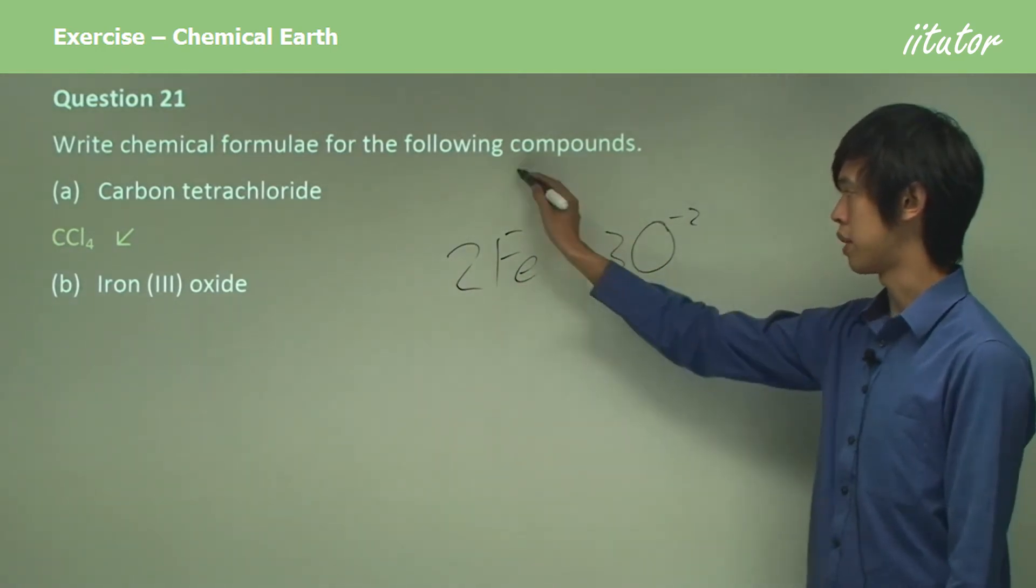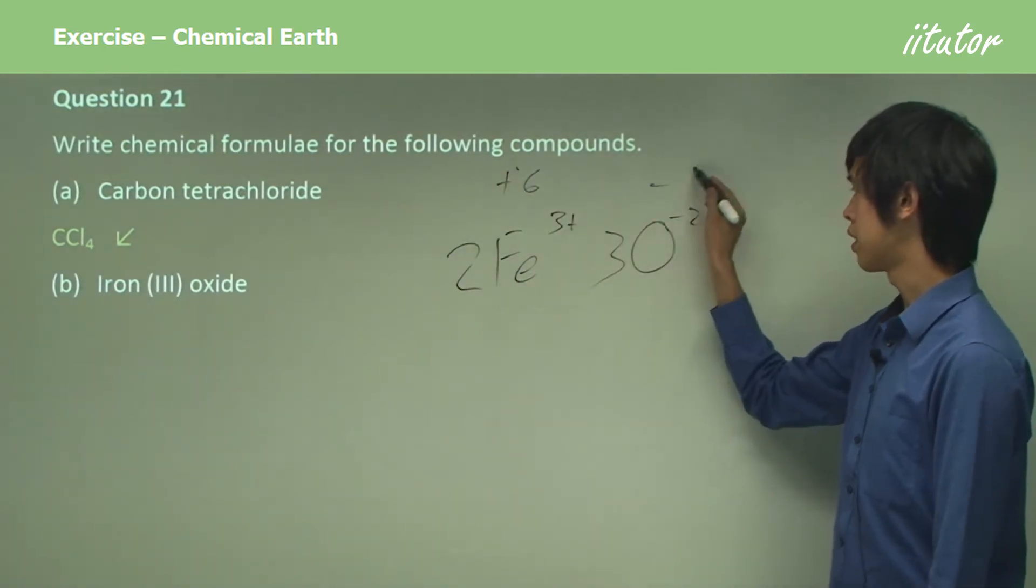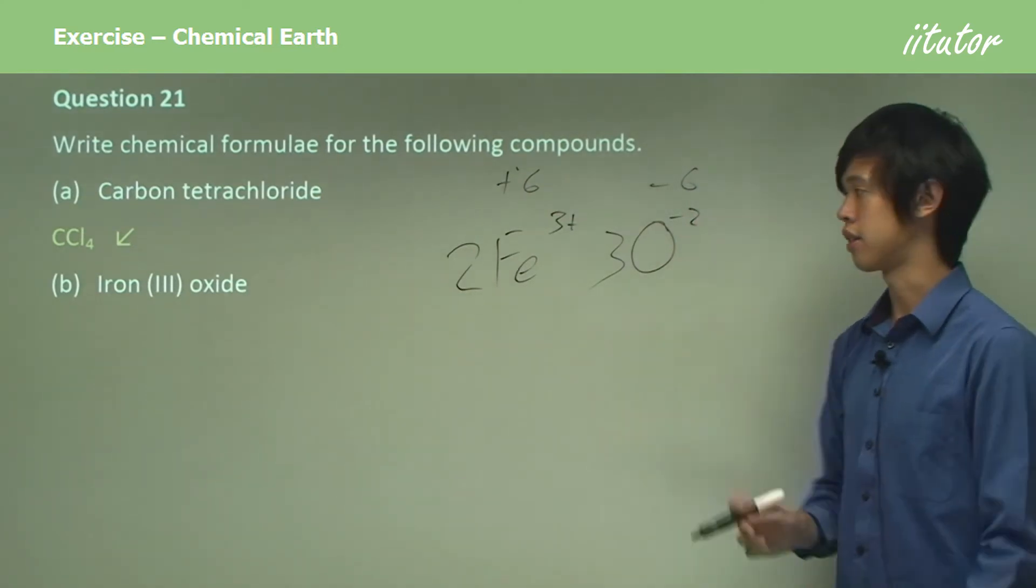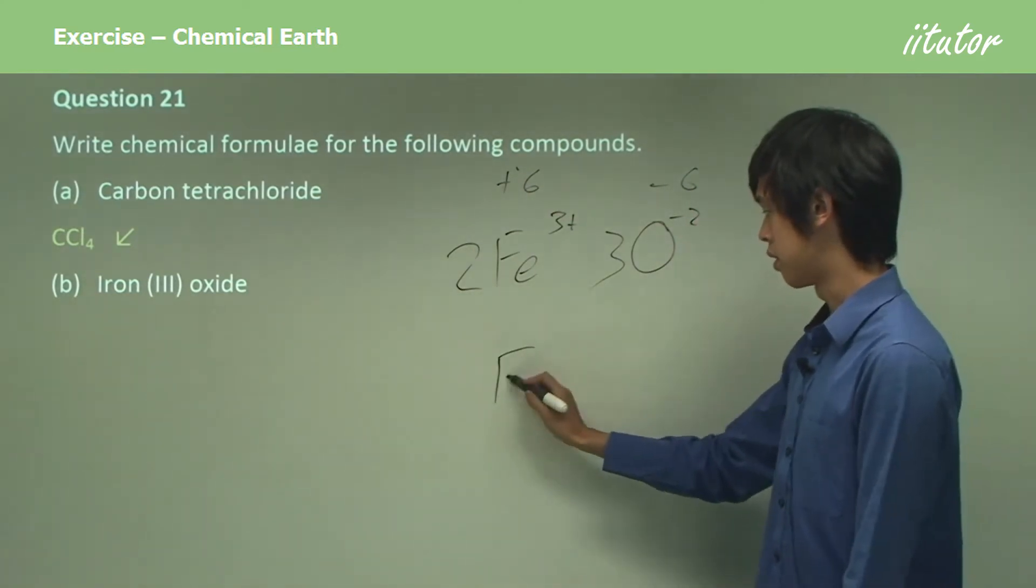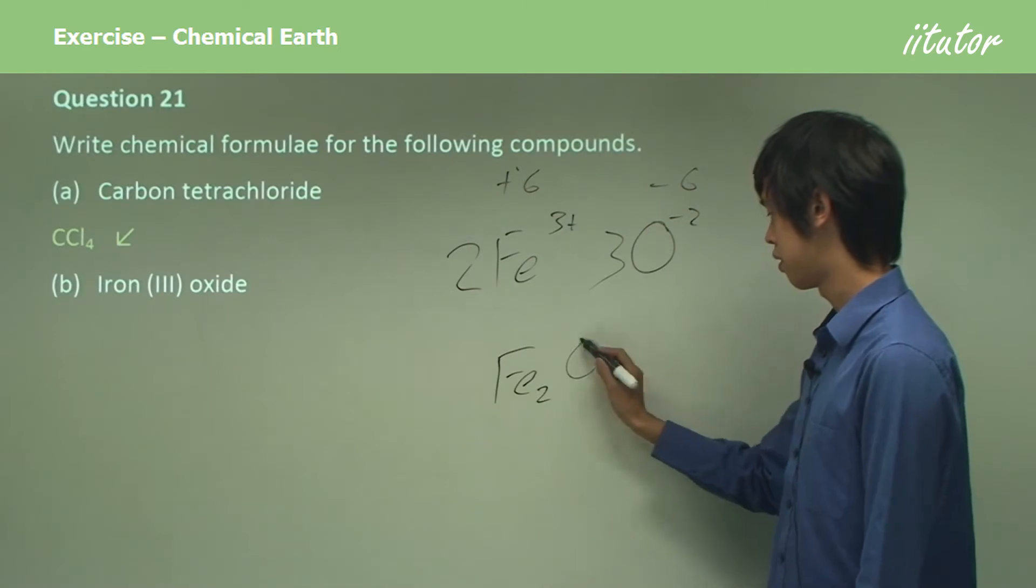And you get plus 6, minus 6. So when you put them together they cancel out. So what we do here is we write Fe2O3.